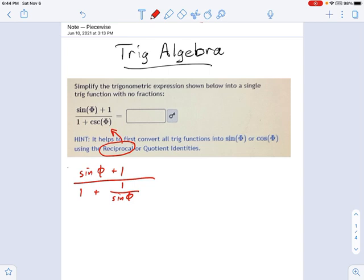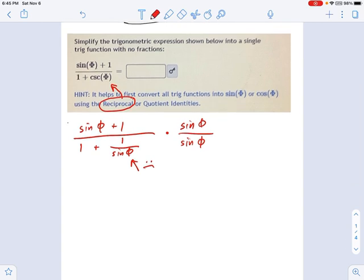But if you remember how to clear denominators using a crazy one, I'm going to multiply this by sine phi over sine phi. And that's going to get rid of that sine phi in the denominator down here. So let's see how we go about this now. I'm going to multiply in and I get sine squared phi plus sine phi on the top of the fraction.